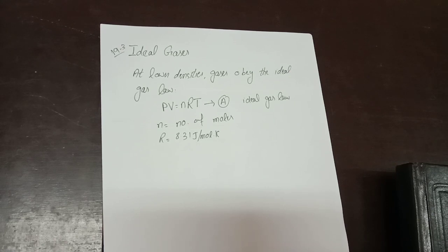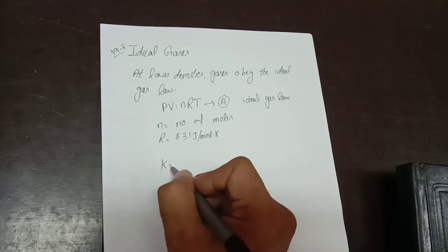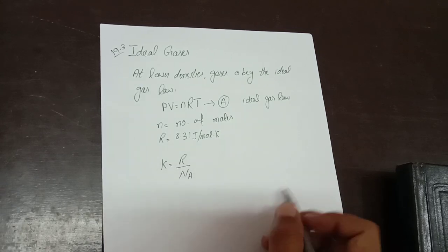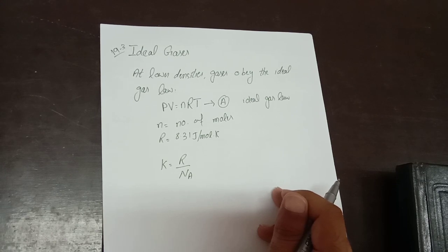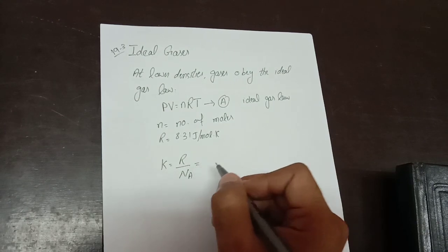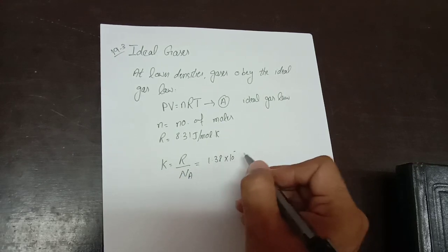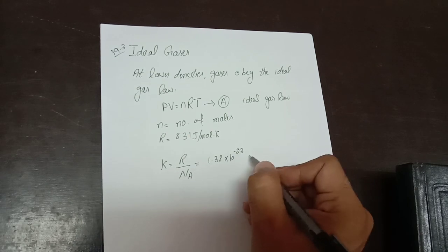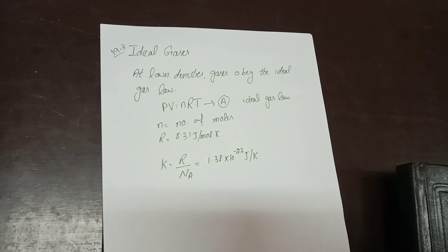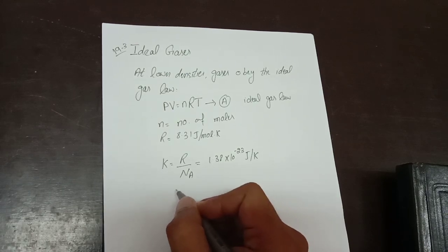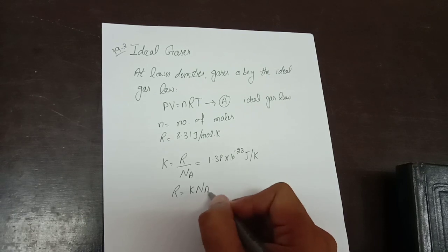I want to derive another form of the ideal gas law in terms of Boltzmann's constant. Boltzmann's constant K is given by the gas constant R divided by Avogadro's number NA. Its value is 1.38 × 10⁻²³ J per Kelvin. From this relation, R = K × NA.